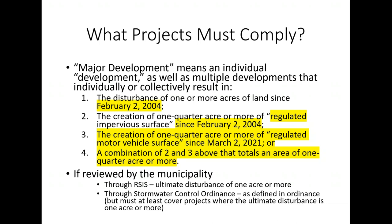A completely new trigger is the creation of one-quarter acre or more of regulated motor vehicle surface since March 2nd, 2021. This is tied to the operative date of these amendments because it did not exist in prior rules. It was added because we changed the threshold for water quality requirements to motor vehicle surface, so motor vehicle surface also needed to be a trigger for major development — you wouldn't want something triggering water quality without first triggering major development.